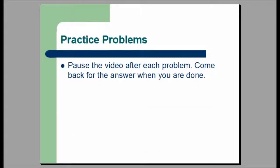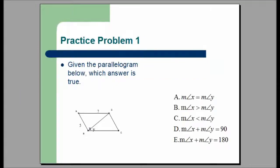Pause the video after each problem and come back for the answer when you are done. Practice problem one is a multiple choice question. Given the parallelogram below, which answer is true? A: the measure of angle X equals the measure of angle Y. B: the measure of angle X is greater than the measure of angle Y. C: the measure of angle X is less than the measure of angle Y. D: the measure of angle X plus the measure of angle Y equals 90. Or E: the measure of angle X plus the measure of angle Y equals 180.